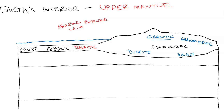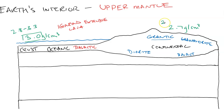We should also discuss density, because when it comes to plate tectonics, boundaries, and movement of the crustal plates, density is very important. The density of the oceanic crust is on average 3.0 grams per centimeter cubed, while continental crust is less dense at generally 2.7 grams per centimeter cubed. There is a range: oceanic crust ranges from 2.8 to 3.3, and continental from 2.6 to 2.8. The larger range for oceanic crust is based on its age and the basaltic magma that forms it.